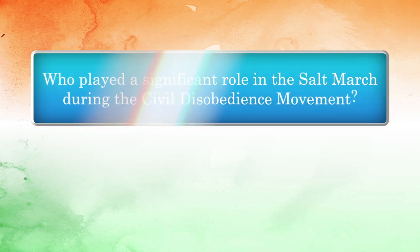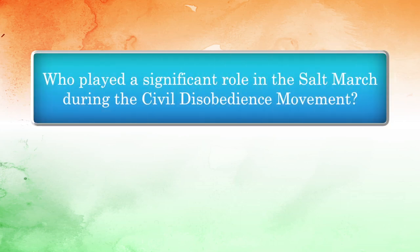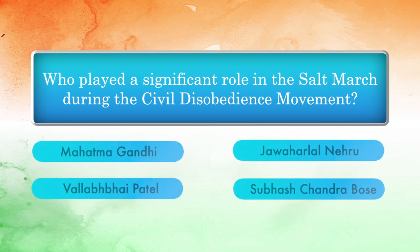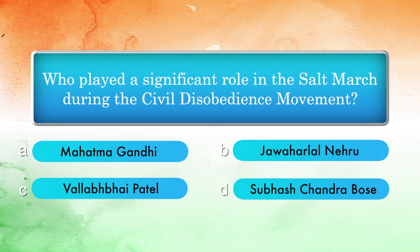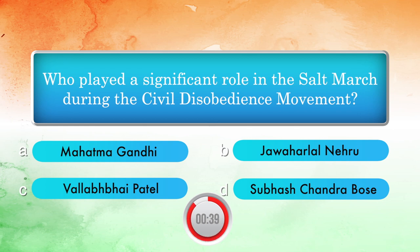Who played a significant role in the Salt March during the Civil Disobedience Movement? Options: Mahatma Gandhi, Jawaharlal Nehru, Vallabhbhai Patel, Subhash Chandra Bose. Answer: Mahatma Gandhi.